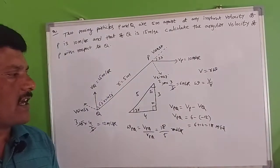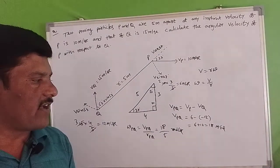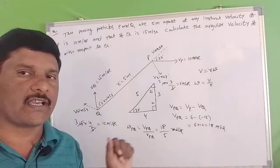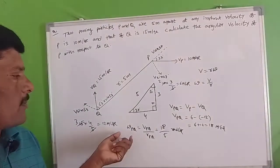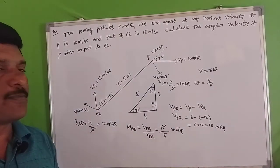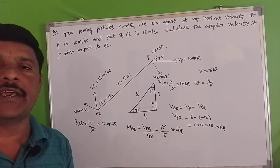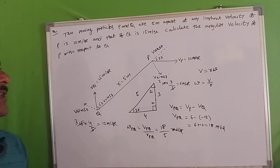Linear velocity is in meters per second, but angular velocity is in radians per second. Now let's look at the next problem.